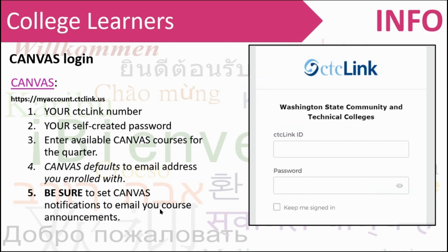When you get into Canvas, you'll need to log in with your CTC Link ID number and your password — write it down somewhere safe. You'll be able to enter the available Canvas courses for the quarter based on what the instructor has set up. Make sure that in each of your classes you go to your Canvas account preferences and set up notifications so that announcements and important emails from your instructor get emailed to you — for example, if office hours are cancelled or rescheduled.